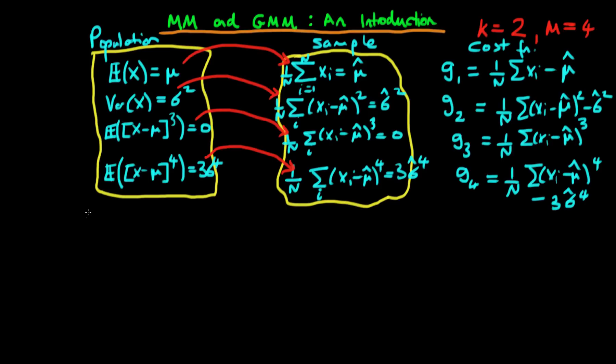So what we could do is we could choose, in this case, mu hat generalized method of moments—in other words, our method of moments estimator of mu—and sigma hat generalized method of moments. Actually I'm going to use sigma hat squared to minimize some sort of linear combination of these costs.